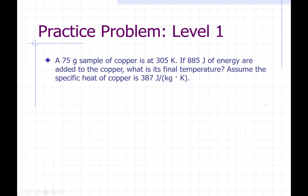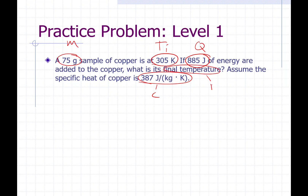Next question: a 75 gram sample of copper is at 305 Kelvin. If 885 joules of energy are added to the copper, what is the final temperature? Assume the specific heat of copper is 387 joules per kilogram Kelvin. Here's our specific heat capacity, this is our initial temperature, this is the heat that's added, this is our mass. We're solving for final temperature, T final. Notice our mass is in units of grams and our specific heat has units of kilograms in it.